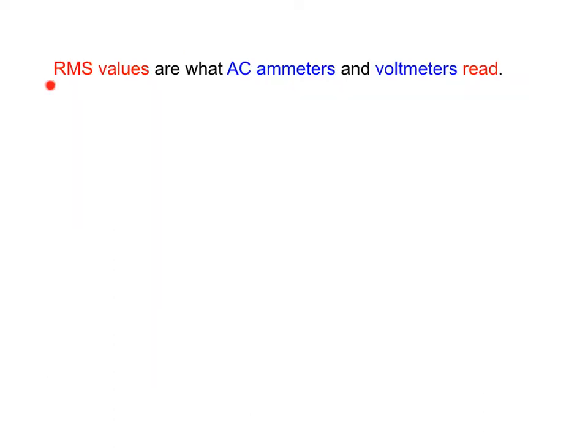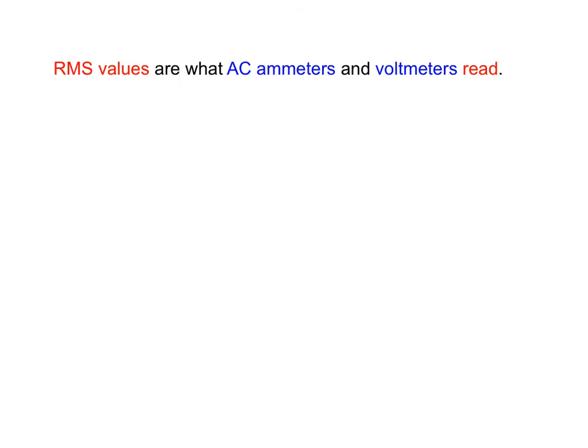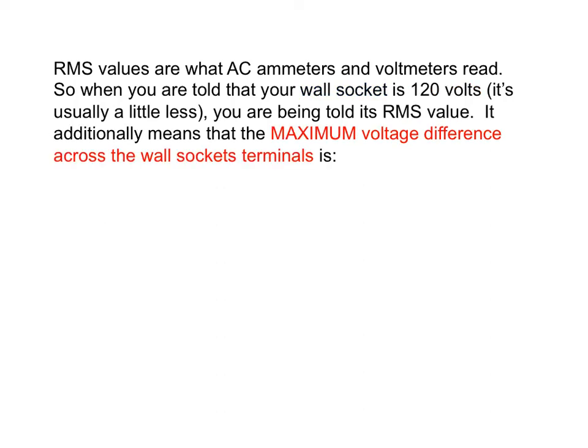It turns out that RMS values are what AC ammeters and voltmeters read. So when you're told that your wall socket is running at 120 volts, what you're being given is its RMS value. That's the value that an AC voltmeter would read if you plugged it into the wall socket.